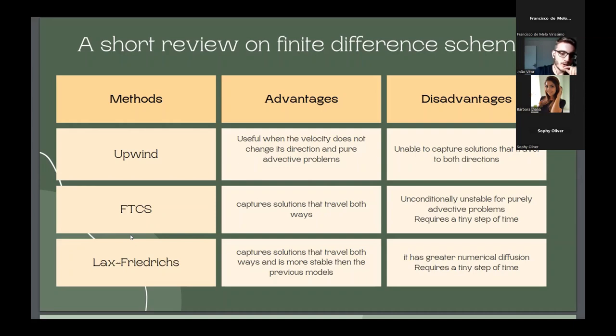And then I tried FTCS, forward-time-centered-space. This method captures solutions that travel both ways, but was unconditionally unstable for purely advective problems and requires a tiny step of time. So, we have a problem of stability here.